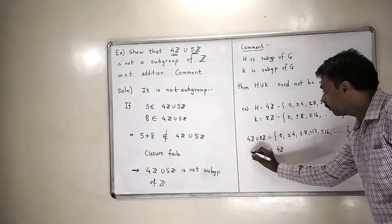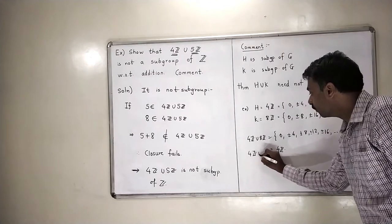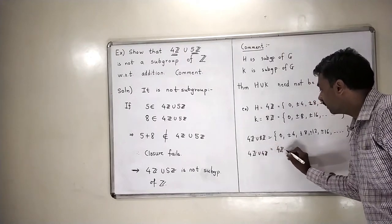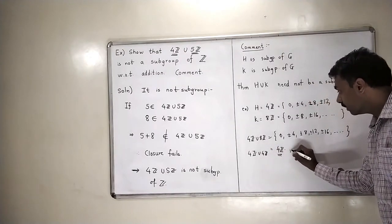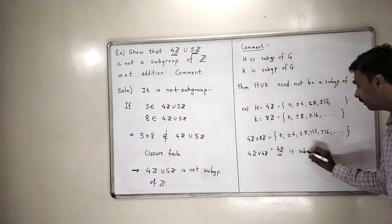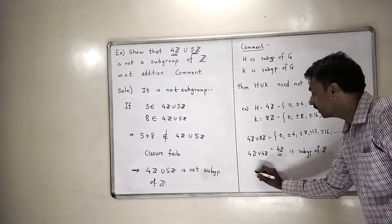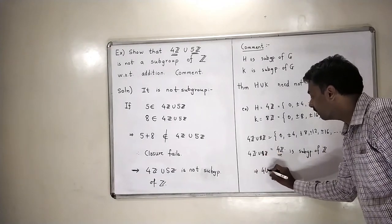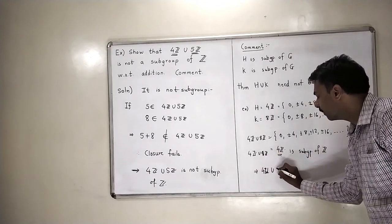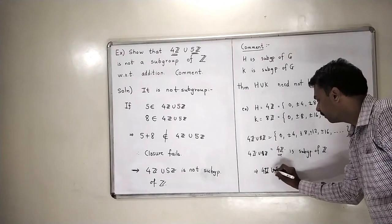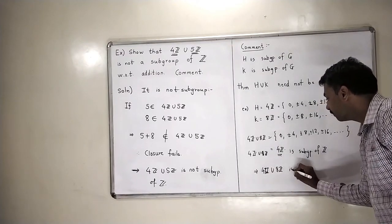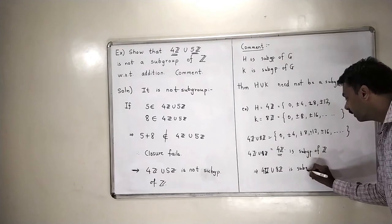Now, so 4Z union 8Z is equal to 4Z. So this means that, but I know that 4Z is a subgroup of Z. So my conclusion is that 4Z union 8Z is a subgroup of Z.